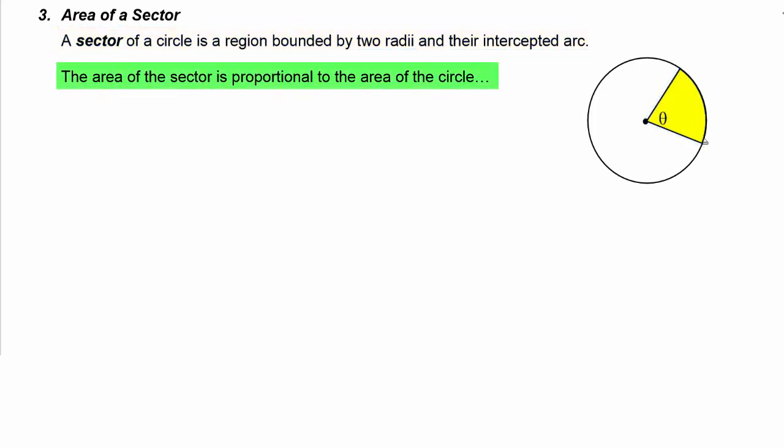Now the area of the sector is proportional to the area of the circle. So we can say the area of the sector is to the area of the circle in the same proportion that theta is to going all the way around the circle, which is 2π.